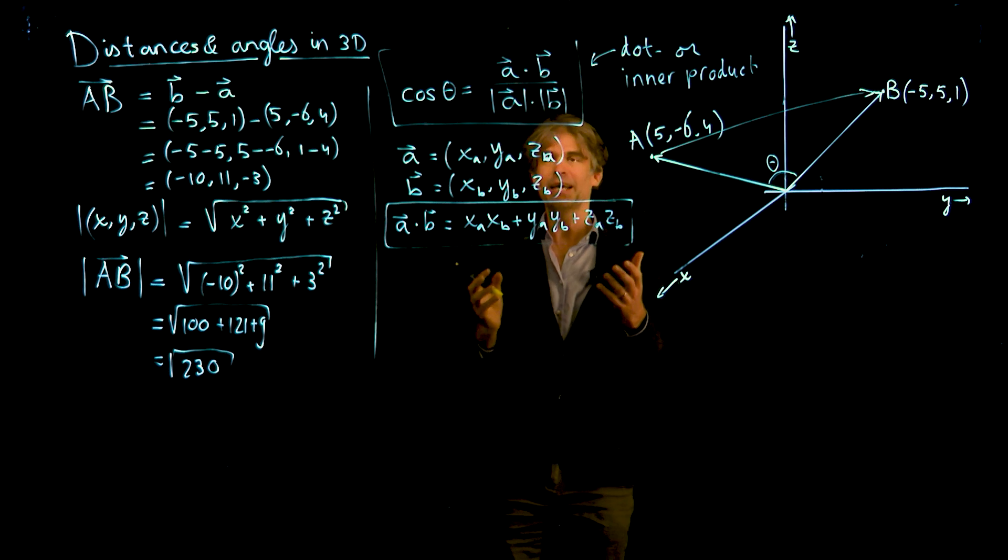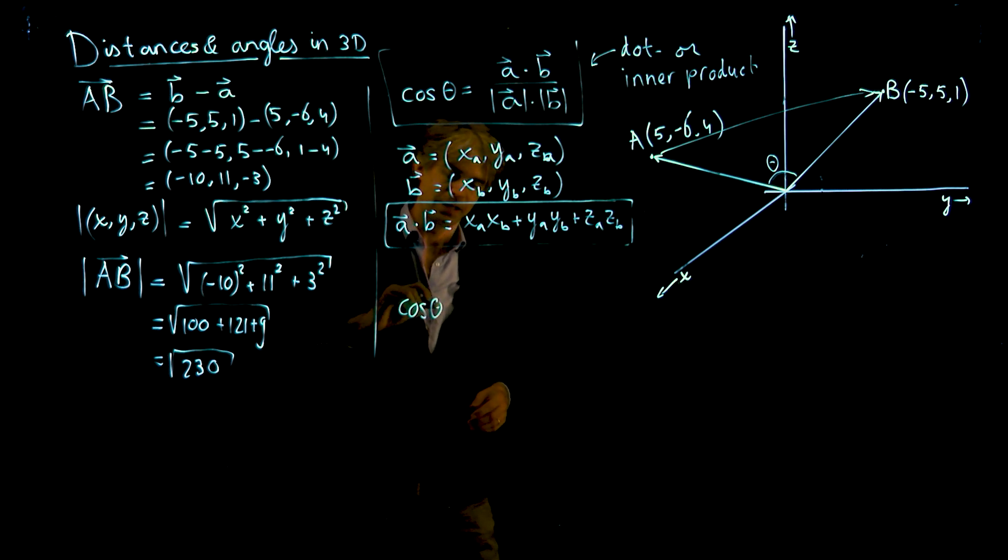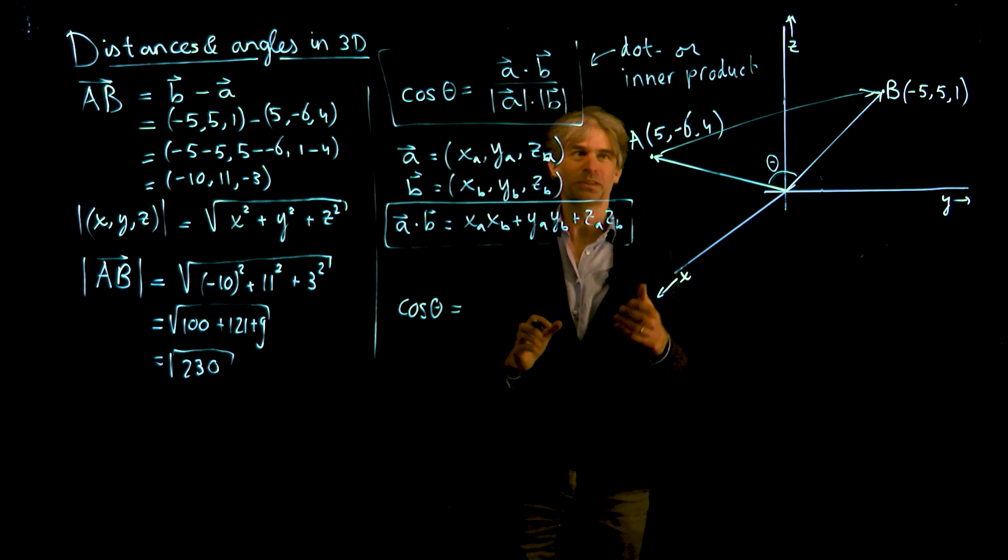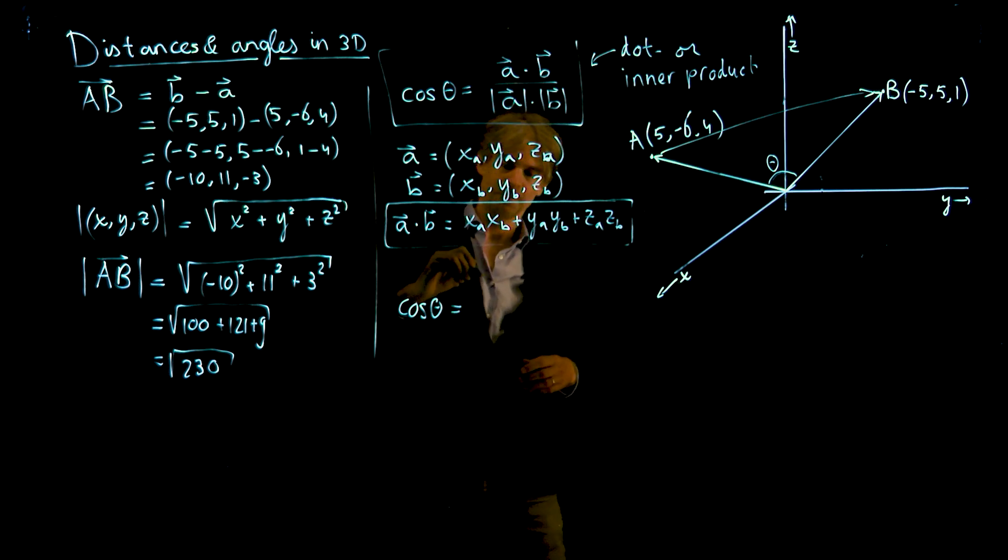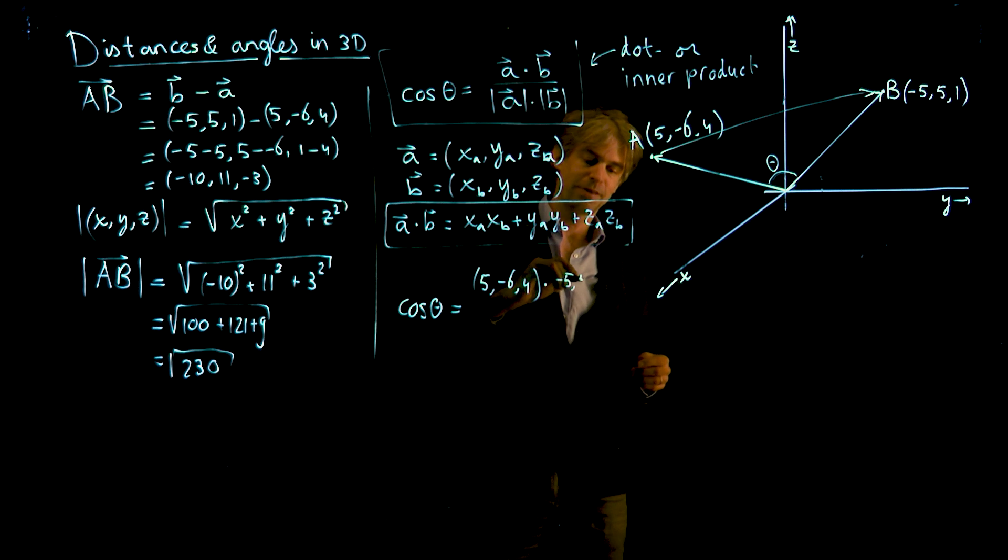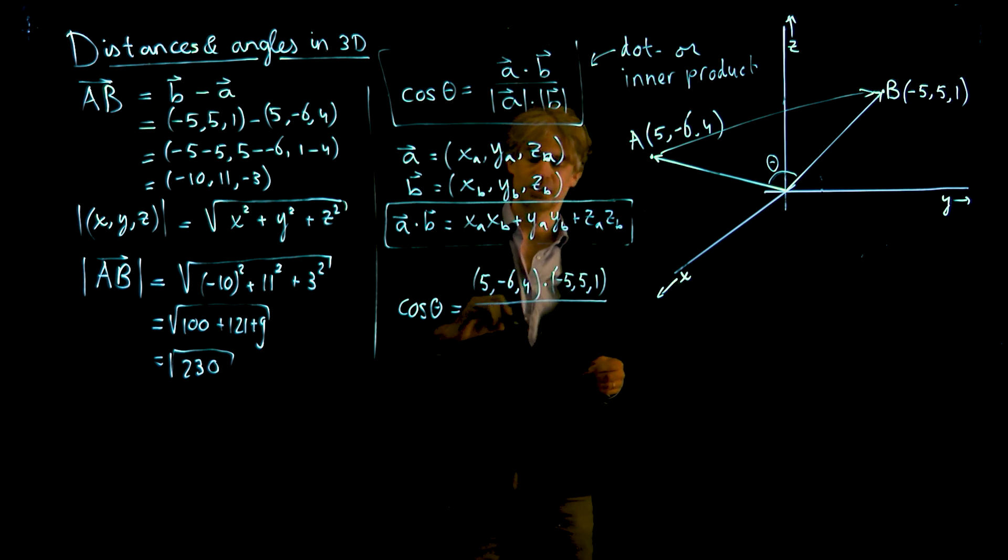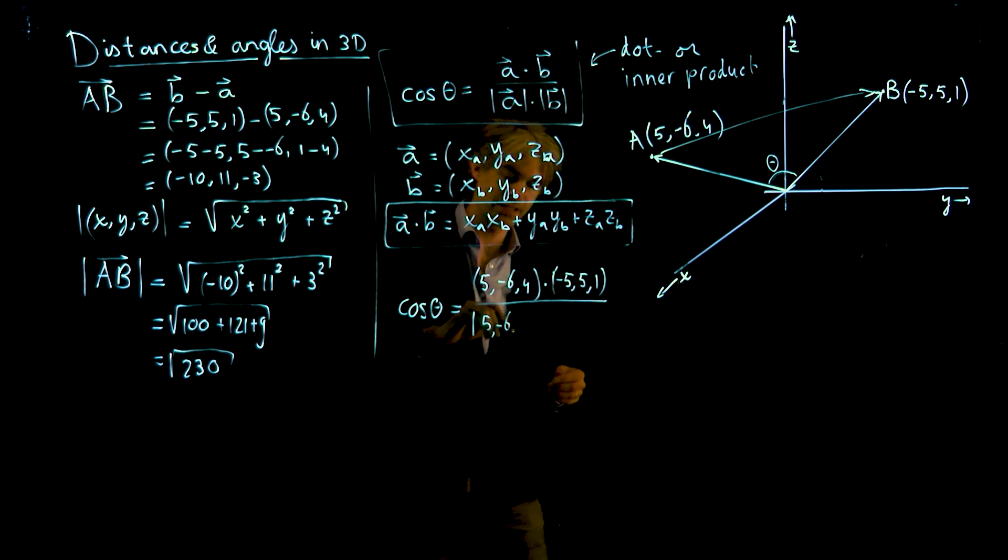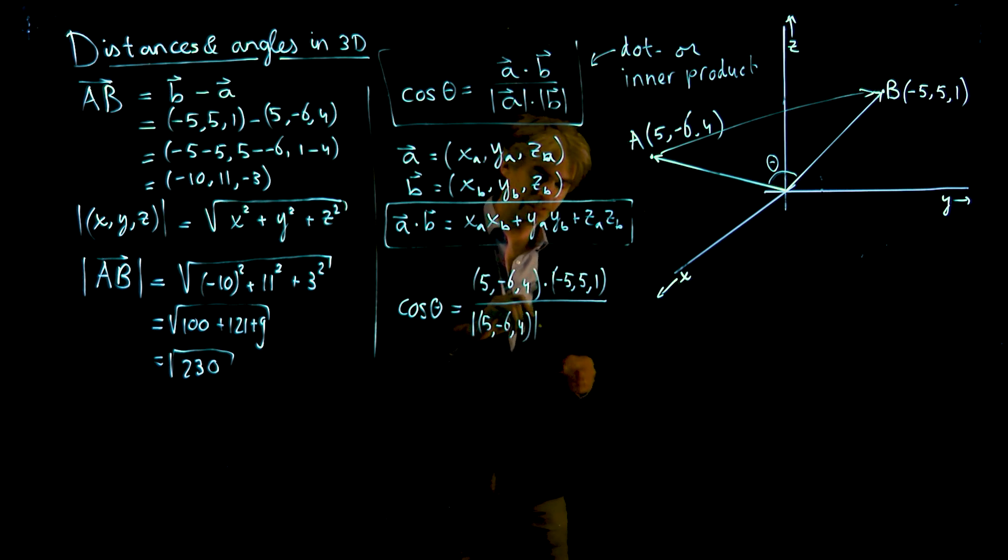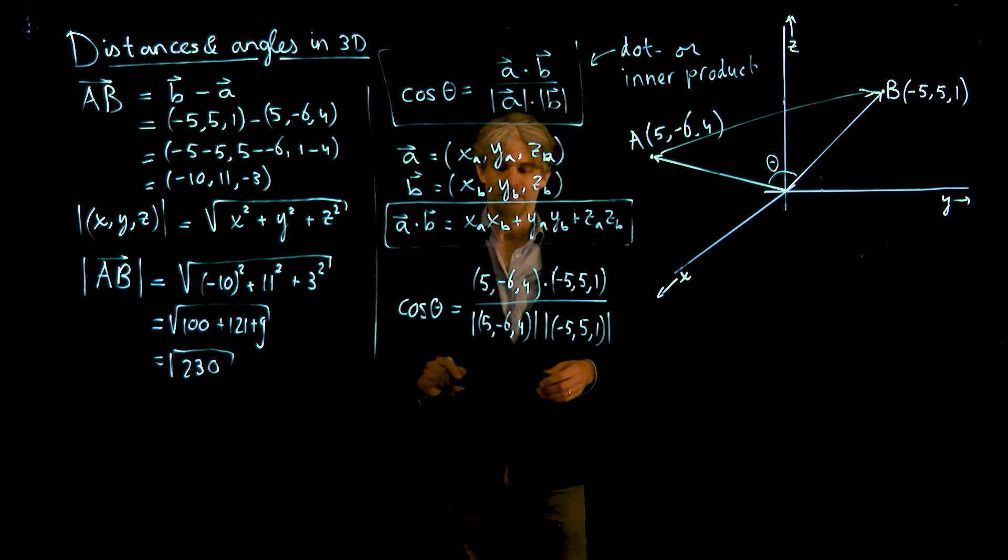Now let's apply it. I want this theta and I know that the cosine of theta equals the dot product, the inner product of these two vectors. So it's (5, minus 6, 4) dot product with (minus 5, 5, 1), divided by the length of these vectors. So it's the length of (5, minus 6, 4) times the length of (minus 5, 5, 1). So far, so good.